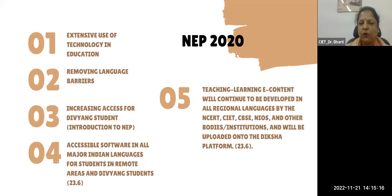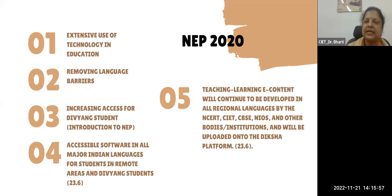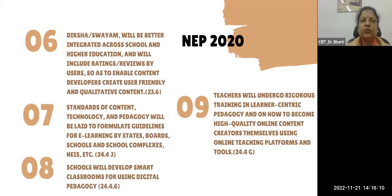Third point: access for all - digital content created needs to be increased for young students, and we have to prepare accessibility software taking into account all accessibility concerns, be it related to disability, disadvantages, or any other special needs. Fifth point: teaching-learning e-content will continue to be developed in all regional languages. We have 22 scheduled languages, but more than that we have five language families, and within these we have more than 1,700 accepted languages within India itself. Diksha and SWAYAM will be better integrated across school and higher education - this is recommendation paragraph 23.6 of NEP 2020.